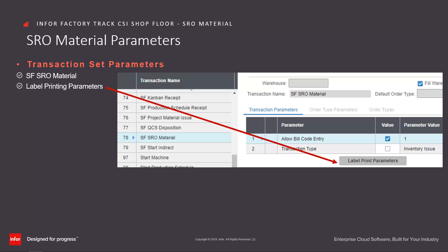By clicking on the Label Printing Parameters button, the option to include printing labels as part of the process can be defined. Enabling the Print Labels feature results in the label printing form being displayed following successful processing of the SRO material transaction. For this training, we have enabled these parameters in order to show where these fields appear and validations that occur in the transaction steps.